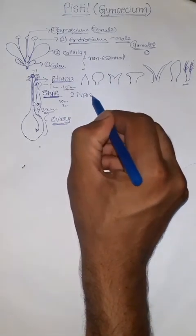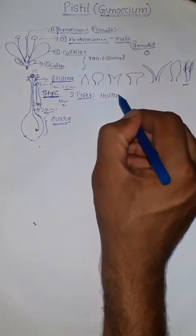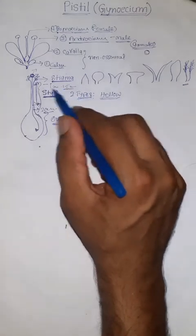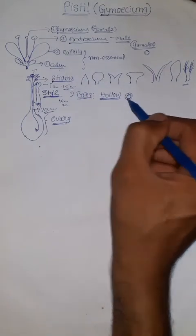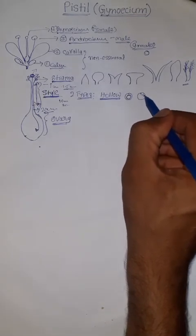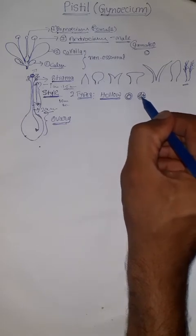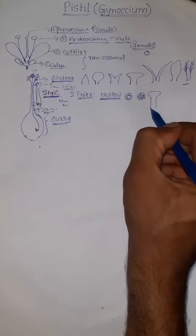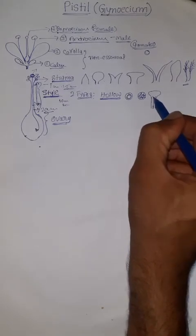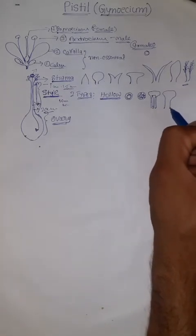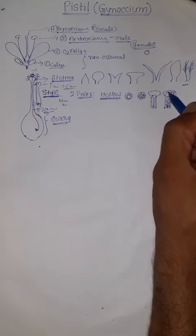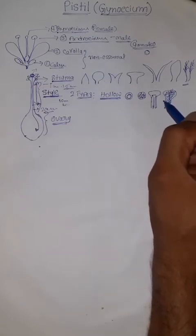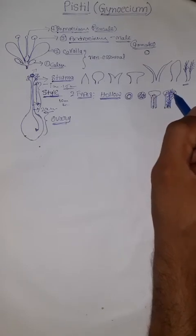Styles are usually of two types. Some styles are hollow in anatomy — when we open the style, there is a small pore or gap inside, like a tube. Some styles are solid, filled with parenchyma tissue. In both hollow and solid styles, the pollen tube can move. The hollow style is more convenient compared to the solid type.